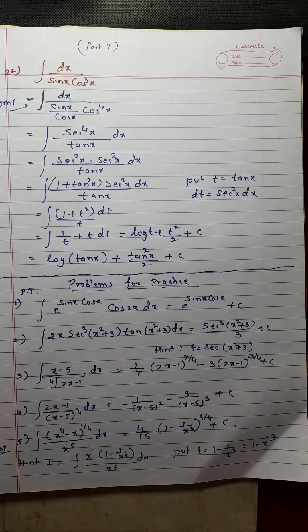The problem is integration of dx upon sin x cos cube x. This is an important step — you should remember it. You multiply and divide by cos x here, so this will become cos raised to 4x.